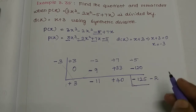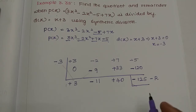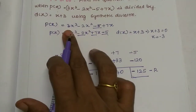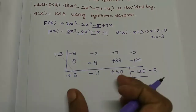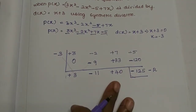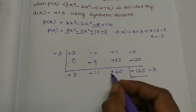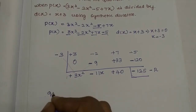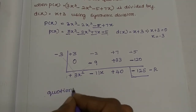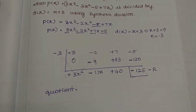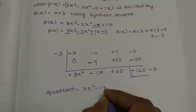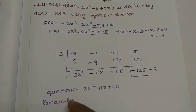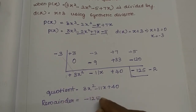So -125 is the remainder. For the quotient, we use the remaining values. The degree reduces by one, so we assign: 3 is x², -11 is x, and 40 is the constant. Therefore, the quotient is 3x² - 11x + 40, and the remainder is -125.